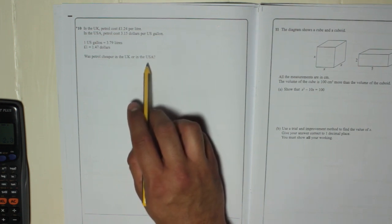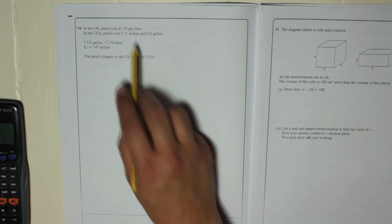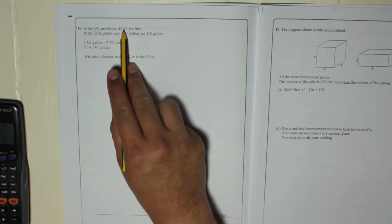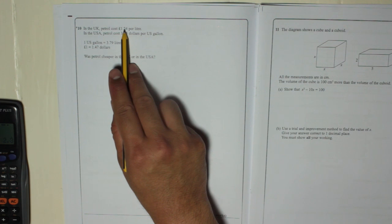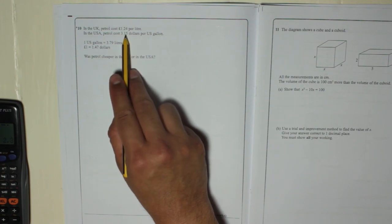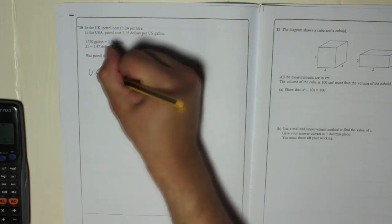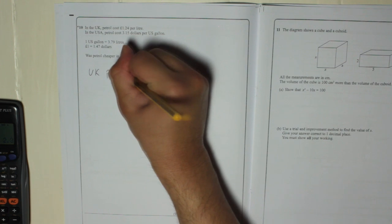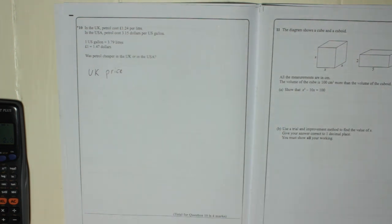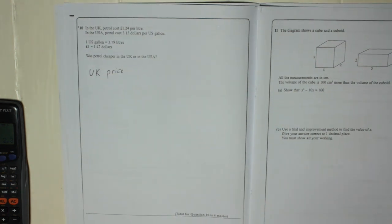To do this what we need to do is either turn the UK price into dollars and gallons or you can take the USA price and turn that into pounds and litres. So what I'm going to do is take the UK price and turn that into dollars and gallons.